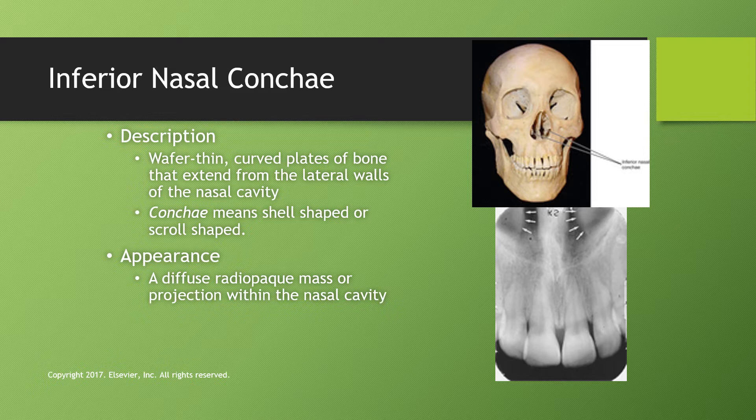The inferior nasal conchae are wafer-thin curved plates of bone extending from the lateral walls of the nasal cavity. The word 'concha' means shell-shaped or scroll-shaped, because it is a piece of bone that curls around itself to create more surface area. On an x-ray, it just looks like a blurry little blob inside the nose on the lateral sides.